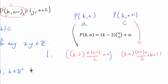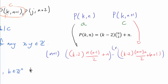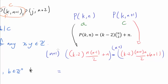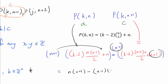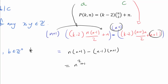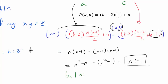Multiplying p(k, n) by (n+1) and p(k, n+1) by (n−1) and subtracting, the (k−2) terms cancel completely. What's left is n(n+1) − (n−1)(n+1), which equals n² + n − n² + 1, giving us n + 1. So it's not 1 — we're not immediately done — but it's very simplified. From this we conclude that b_n divides n + 1.